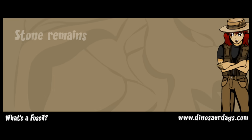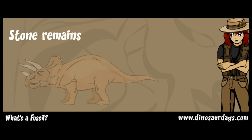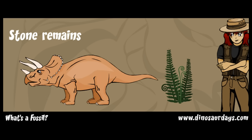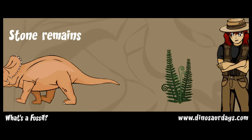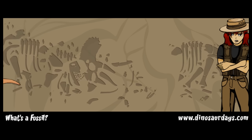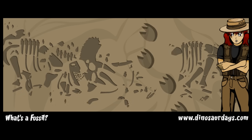Fossils are the stone remains of animals or plants that were once alive. Fossils can be the bones of a dead dinosaur or his big footprints in the sand.